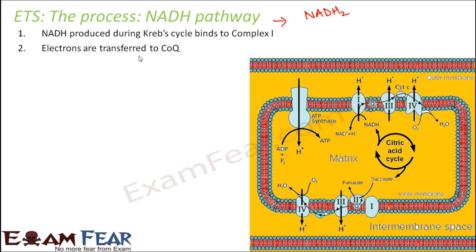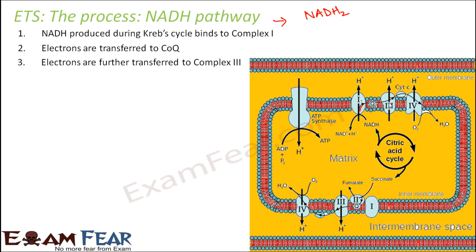Electrons are transferred to Coenzyme Q, that is ubiquinone, which is present between Complex 1 and Complex 3. So here you can see ubiquinone. This electron will get transferred to it, and since ubiquinone is a mobile carrier, it will carry the electron to Complex 3, where the electrons will be transferred.